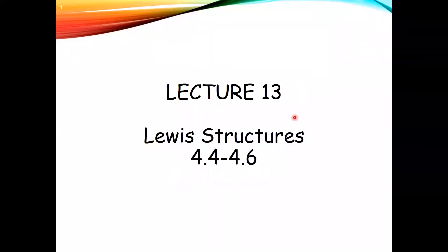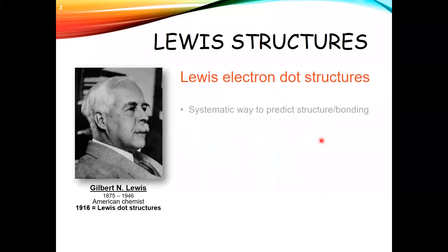This is lecture 13. Today we'll be talking about Lewis structures, and the next lecture we'll be talking about some exceptions to this. What Lewis structures are is a method of drawing molecules. This idea was presented first by Gilbert Lewis, and he came up with what was originally called the Lewis electron dot structure. We've shortened that now to just the Lewis structures or Lewis dot structures. This is a systematic way to predict structure and bonding.